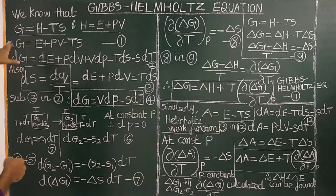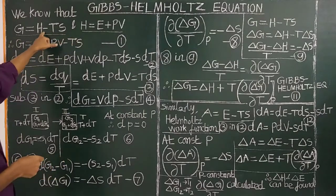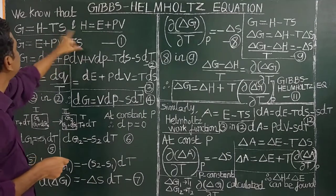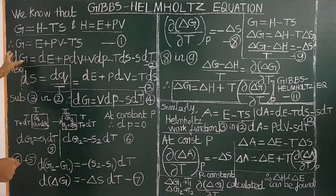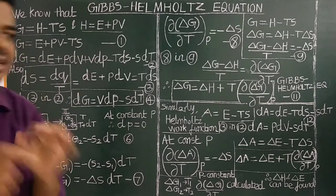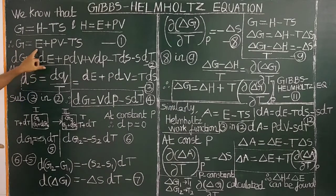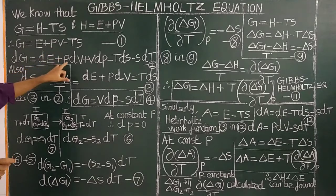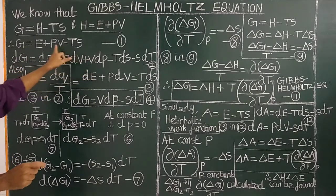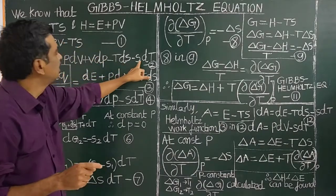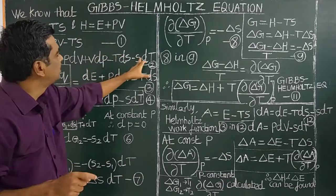H is equal to E plus PV. Now, G is equal to H minus TS, which means G equals E plus PV minus TS. Gibbs free energy is a thermodynamic state function and it is an exact differential. On differentiating: dG equals dE plus P dV plus V dP minus T dS minus S dT.